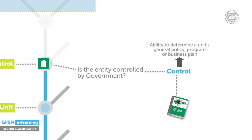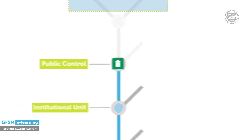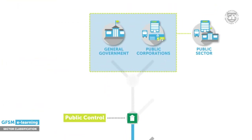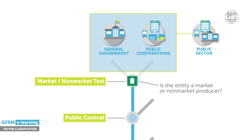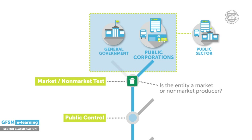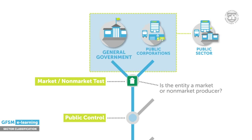All institutional units controlled by the government comprise the public sector. As mentioned earlier, the public sector is split into two main sections: the general government sector and bodies referred to as public corporations. The final node on the decision tree enables us to make this distinction. Is an institutional unit a market or non-market producer? Market producers are classified as public corporations, while non-market producers are classified as part of the general government sector.